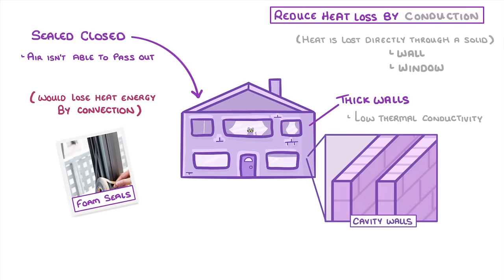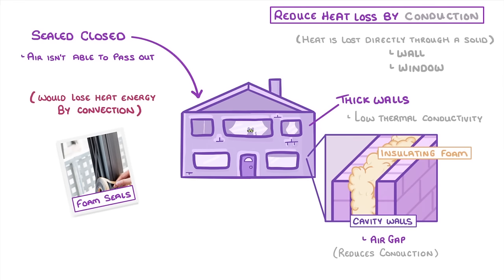Houses also tend to have cavity walls, which is where there are two layers of bricks with a small air gap or cavity between them. This air gap reduces conduction because air is a really poor conductor. The problem is that air does allow convection, so to fix this we fill the gap with insulating foam, which has lots of isolated air bubbles, so there's hardly any convection or conduction.